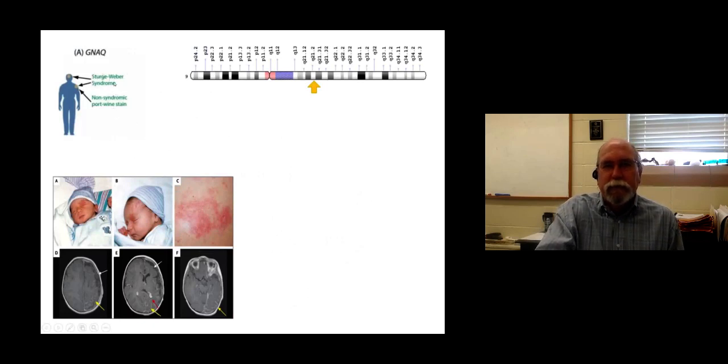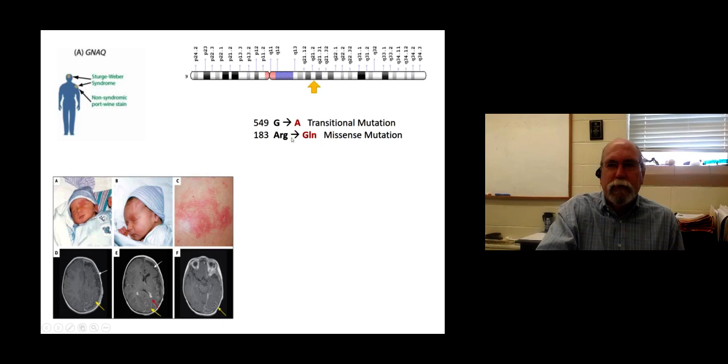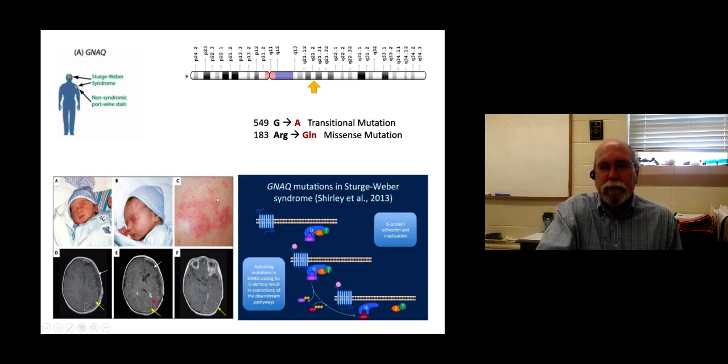One of them is the Sturge-Weber syndrome. This effect is fairly straightforward. On chromosome number nine, there is a single mutation. And this mutation involves a change in a G to an A, so it's a transitional mutation, a common one. This does have an effect because it's a second position, which means an arginine residue gets replaced, and you end up with a missense mutation that occurs.